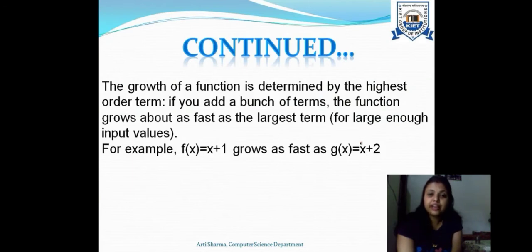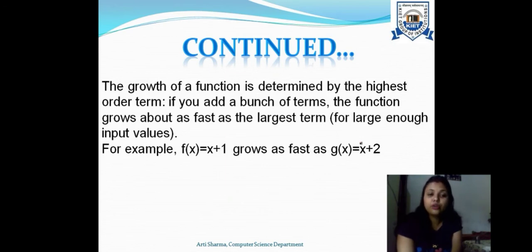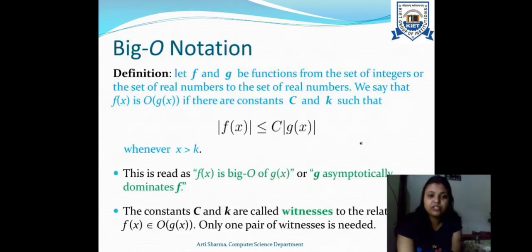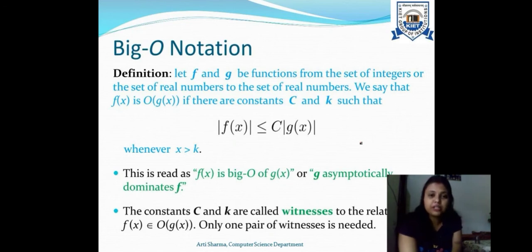The growth of a function is determined by its highest order term. For example, for f(x) = x² + x + 2, the efficiency is defined by the higher order term x². We do not consider lower order terms when defining the growth of a function. To express growth of functions we use asymptotic notations, named after mathematical asymptote functions.